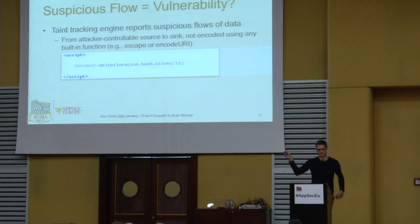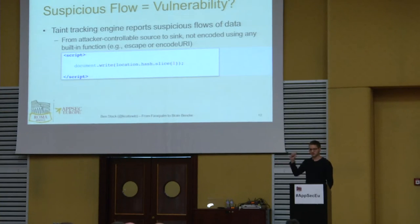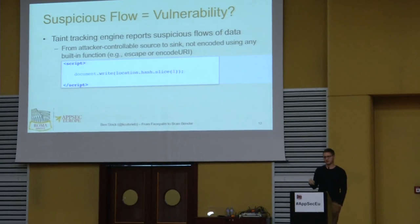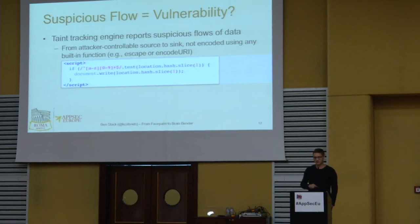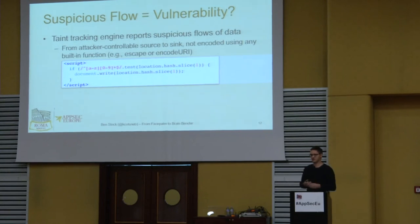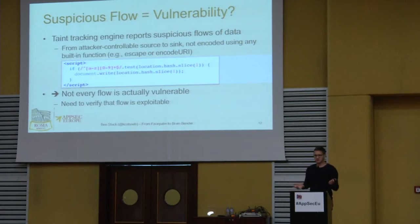The taint-tracking engine reports suspicious data flows — from attacker-controllable sources to security-critical sinks, unescaped. However, not every reported flow is actually vulnerable. For example, if we visited a site with the hashtag set to ABCD, we'd see a data flow to document.write, completely unescaped. But if the snippet included a regular expression ensuring only lowercase alphanumeric characters are permitted, we can't inject HTML, since we'd need greater-than and less-than signs. So we need to verify that a reported data flow is actually a vulnerability.